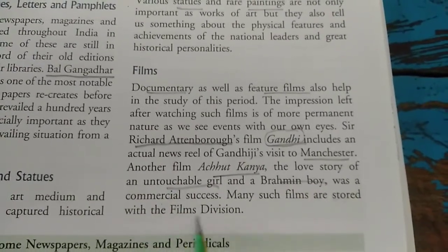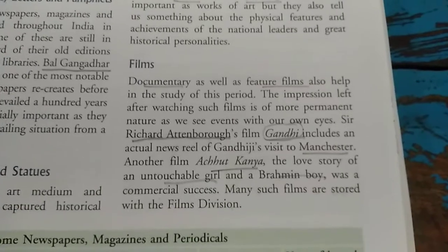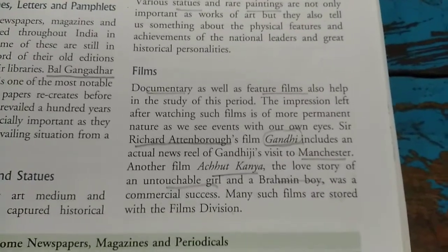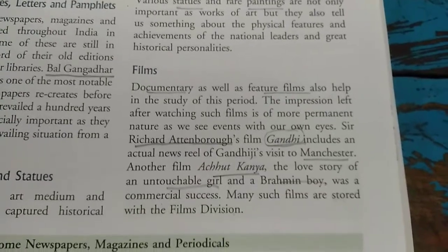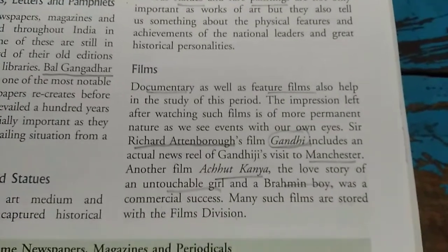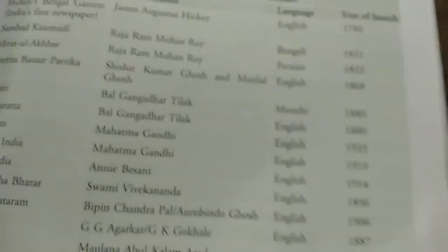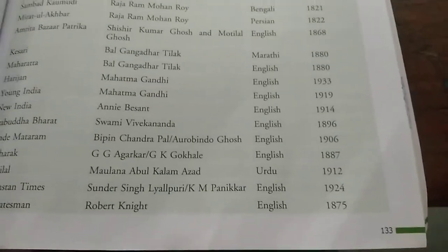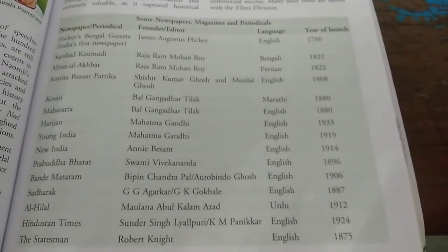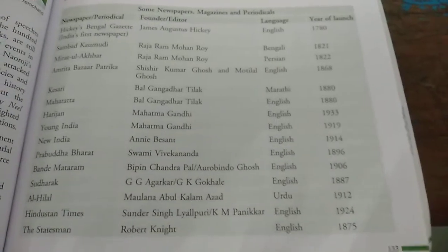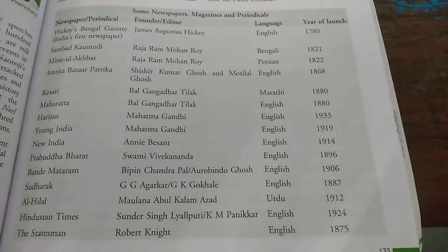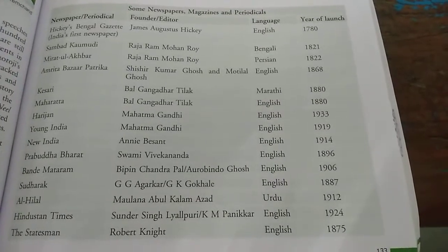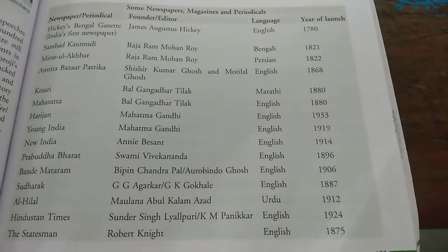Many such films are stored with the film division. There is also a table on page 133 listing newspapers, magazines, and periodicals — their names, founders or editors, languages of publication, and year of launch — which is very important.